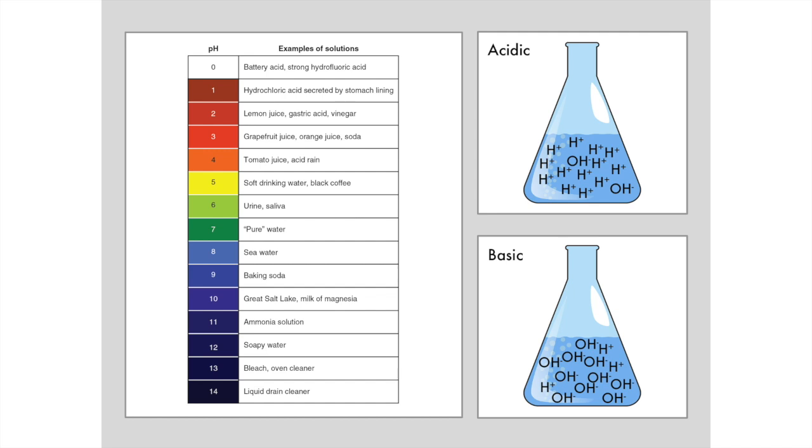Urine and saliva are weakly acidic. Blood, not shown on here, is just a little bit under 7, very slightly basic. Seawater and ammonia are basic solutions, all the way down to bleach and oven cleaner and drain cleaner, which are all very powerful bases.